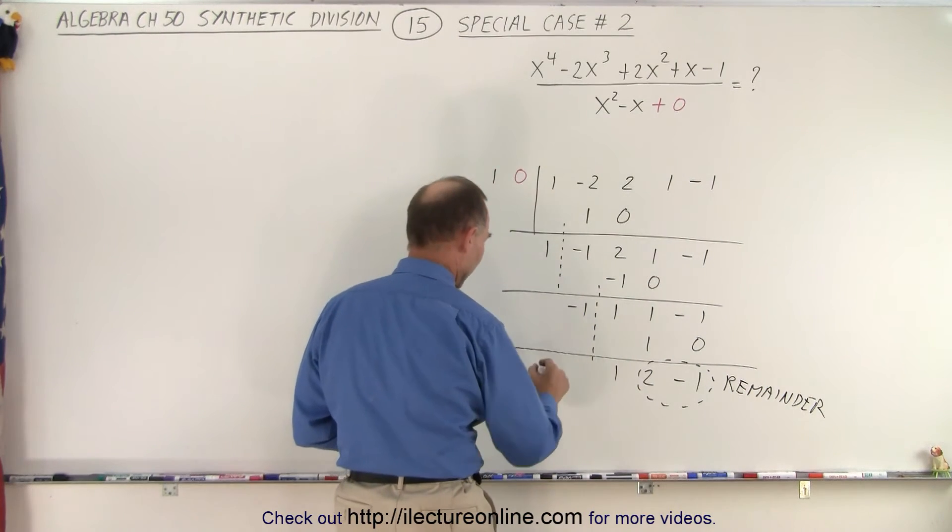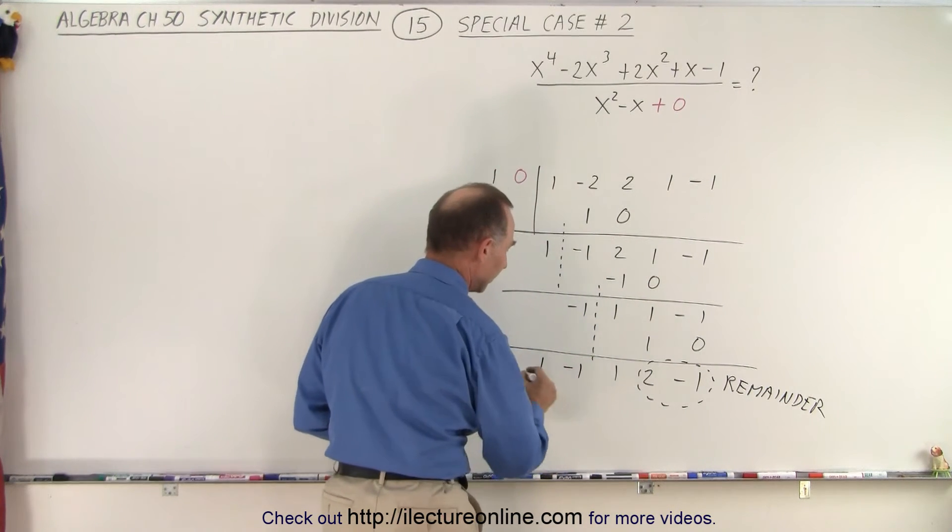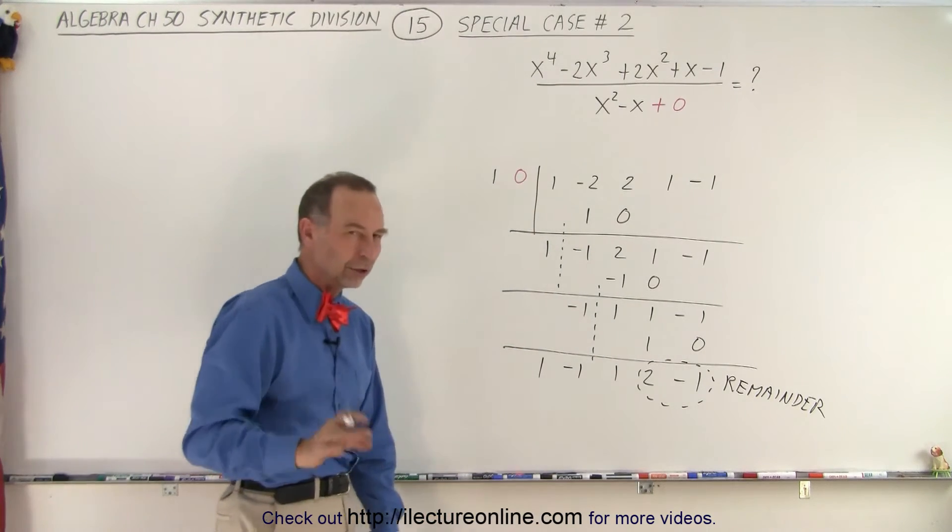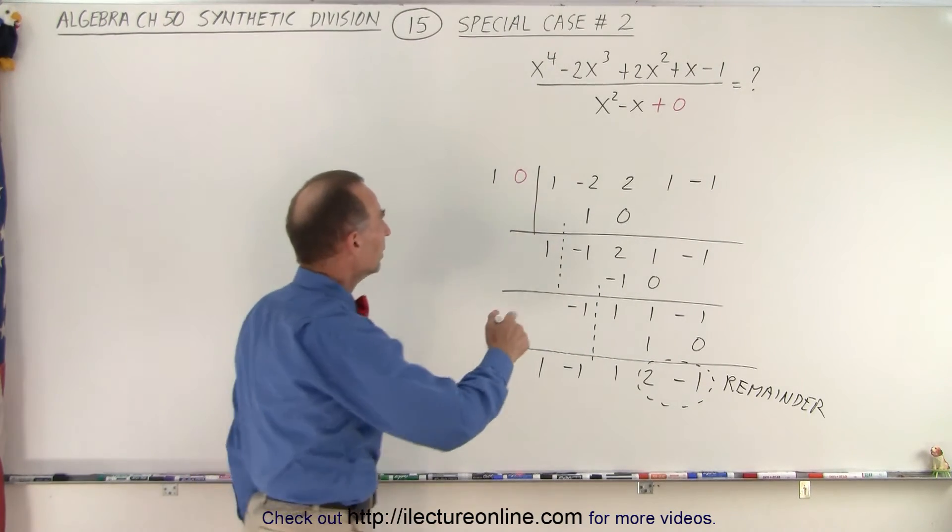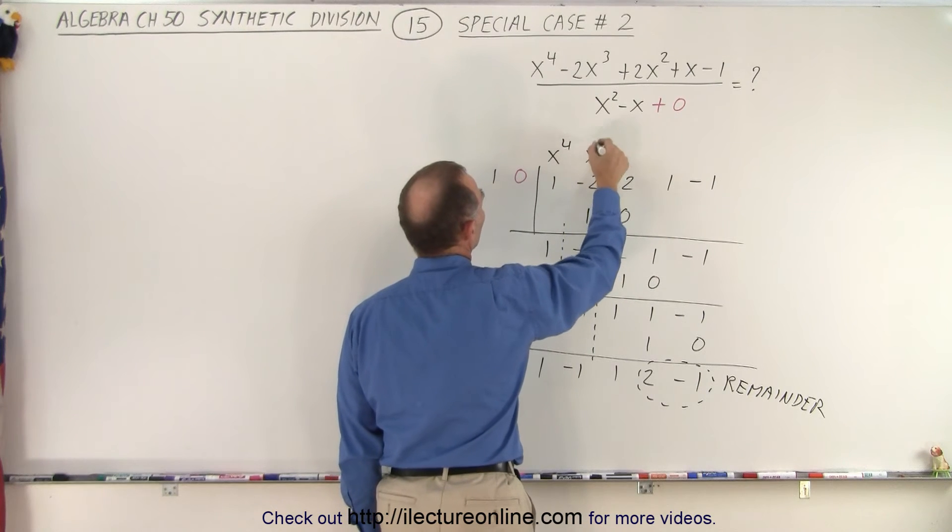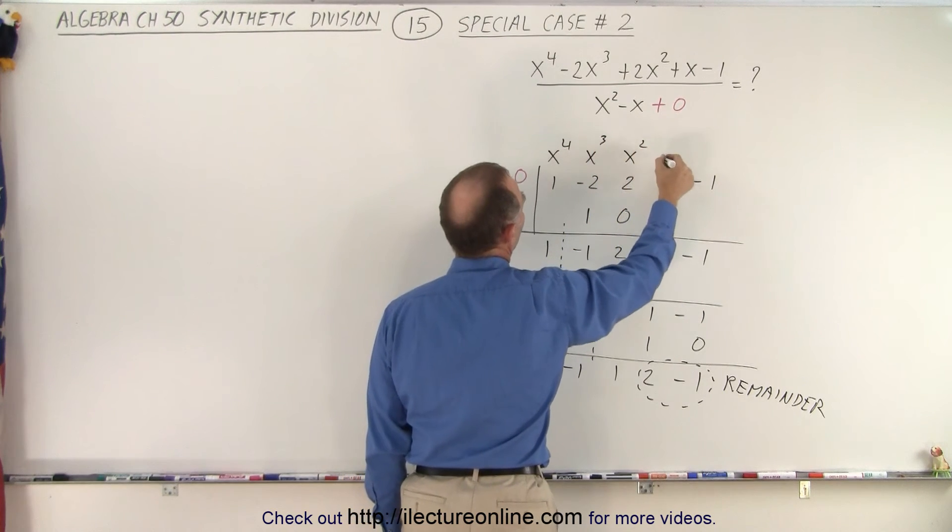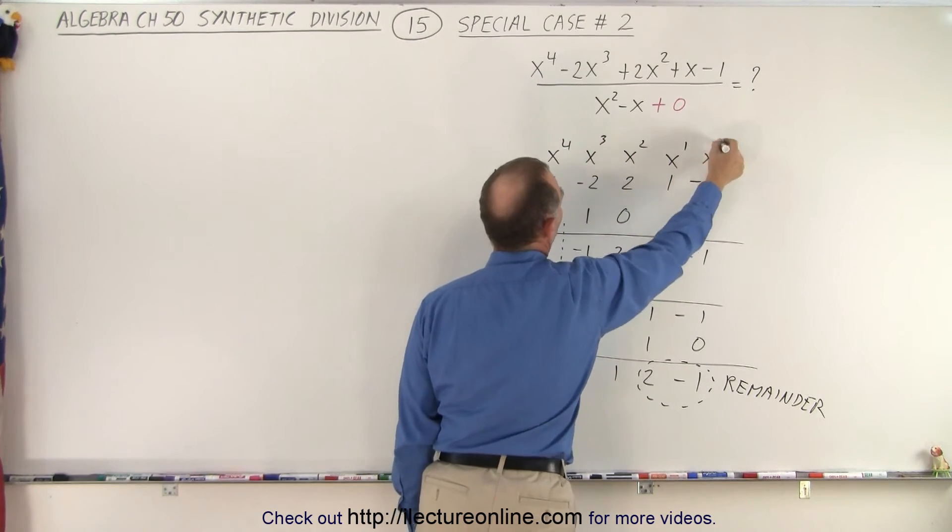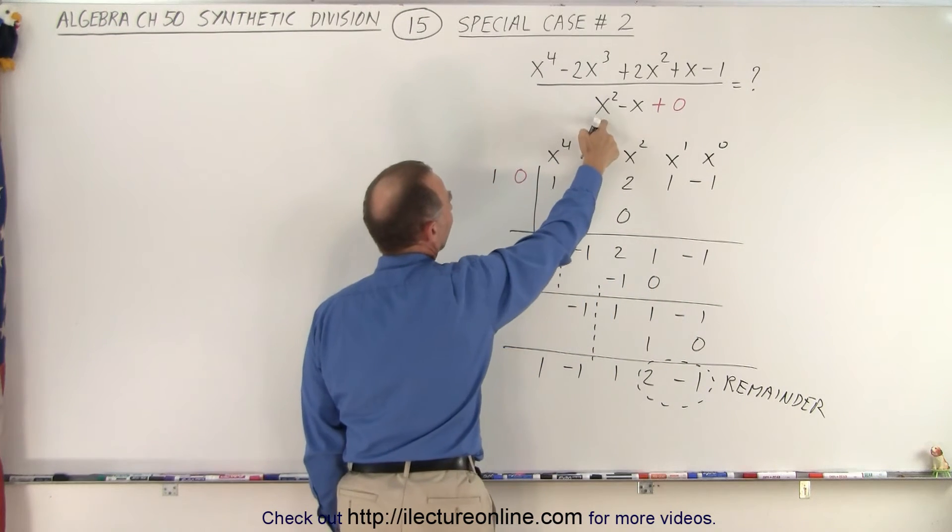If we now bring the other numbers down, we have a 1 there and a negative 1 there, this is our solution right here. But what does it look like? Well in the numerator, we had an x to the 4th, we had an x cubed, we had an x squared, an x to the 1st power, an x to the 0 power, and we divided that by x squared.